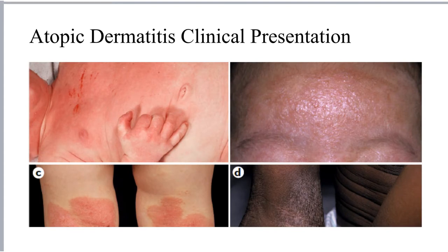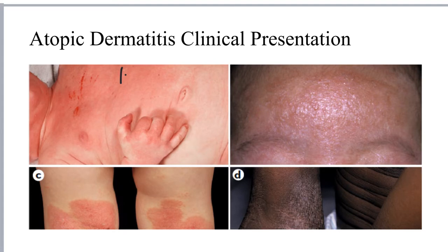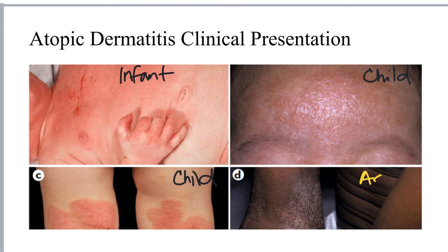The location of skin rashes can differ depending on the age of the individual involved. In infants, the dermatitis rash typically first appears on the face, the scalp, or the upper trunk, as evidenced in the top two images here. In children, you can see thick, leathery, dry skin found typically on the flexural folds of the extremities, like behind the knees or in the elbow crease, as shown in the bottom left image. Adults would have a similar pattern, as well as some lesions sometimes on the face and the hands, as shown in the bottom right image.